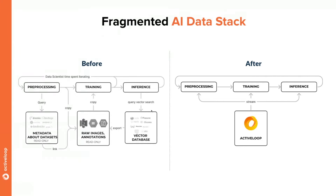What ActiveLoop is focused on is providing a unified data storage layer — storing data in one location, including metadata, unstructured or complex datasets, and vectors — and being able to stream that data very fast to pre-processing, training, and inference. Every new era of computation requires a new data storage: the post-dot-com bubble brought NoSQL databases like MongoDB, social networks brought data warehouses like Snowflake and BigQuery. Every new computation that emerges requires a new data storage because you can't optimize one storage to be efficient for all types of computation.